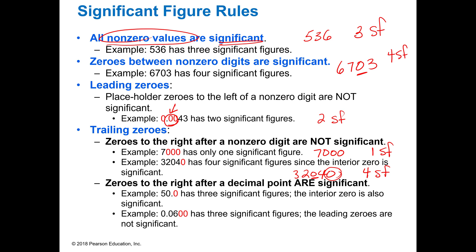That changes if you put a decimal point in there. For example, 50 would have one significant figure, but if I put 50.0, by putting that decimal there I'm telling you that's exactly 50.0, so there are three significant figures in that number. Zeros to the right of the decimal place that are not placeholders are significant — so in the case of 0.0600, the leading zeros are not significant but those last two zeros are, because they're to the right of the decimal place. So 0.0600 would have three significant figures.